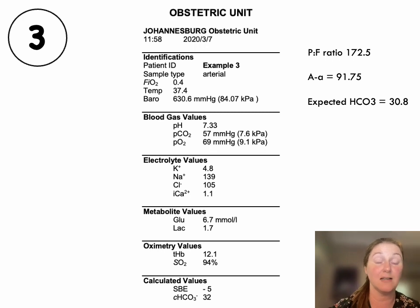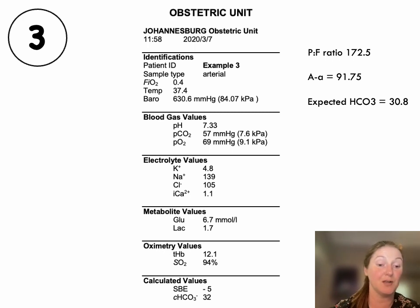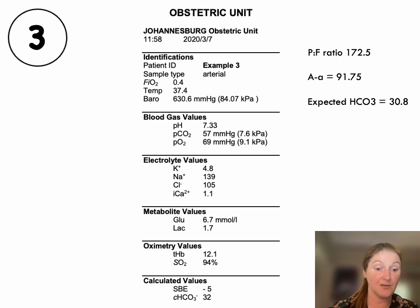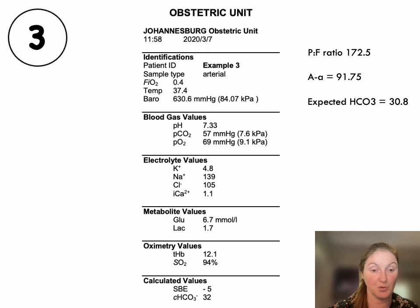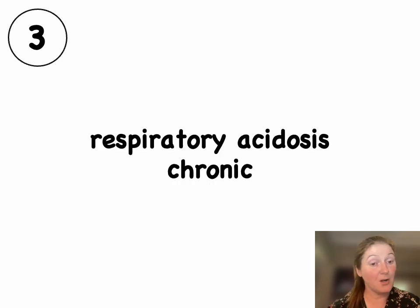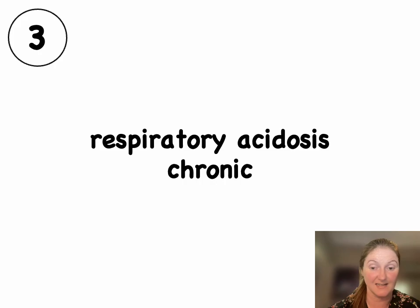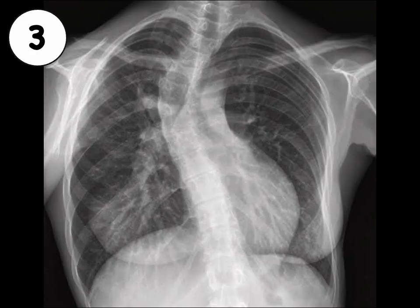I used my cheat sheet to calculate the expected CO2 — it's 30.8, which is pretty similar to the bicarb on the gas. So she has a chronic respiratory acidosis. Electrolytes are all looking okay. Lactate, glucose, hemoglobin are all fairly all right. The base excess is minus 5, telling us there's also a concomitant metabolic acidosis, but it is not a huge portion of her overall acidosis. When we go through to see her in high care, it's very obvious as to the cause of her gas — she's short and has significant kyphoscoliosis causing a COPD-like picture, and this is the cause of her chronic respiratory acidosis.